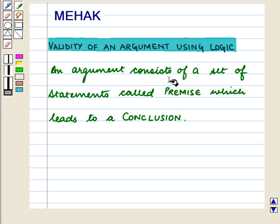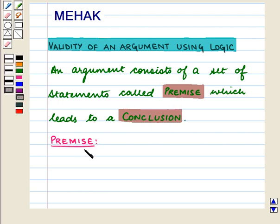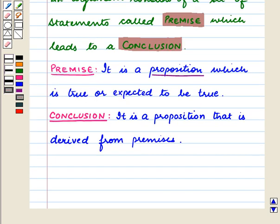An argument consists of a set of statements called premise which leads to a conclusion. We may define premise as a proposition which is true or expected to be true, and conclusion may be defined as a proposition that is derived from premises.